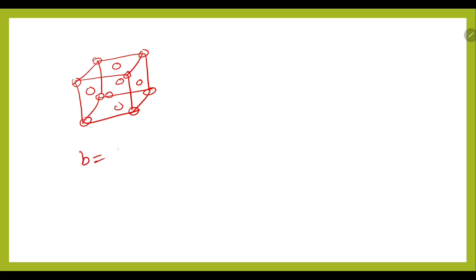Now we will see how the Burgers vector of FCC can be shown in the unit cell. For FCC, the most densely packed direction shows the Burgers vector. In the ⟨110⟩ direction, the half-distance represents the Burgers vector for FCC.